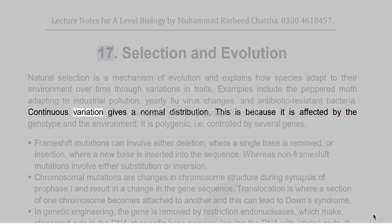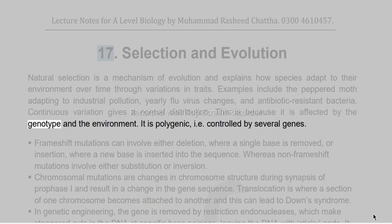Continuous variation gives a normal distribution. This is because it is affected by the genotype and the environment. It is polygenic, i.e. controlled by several genes.